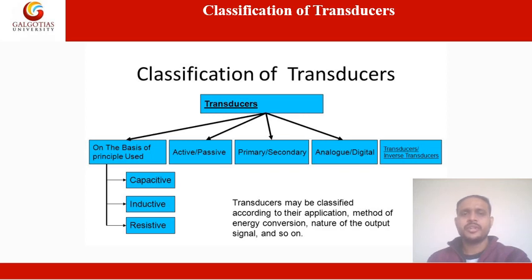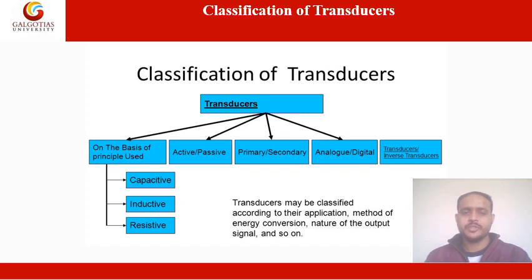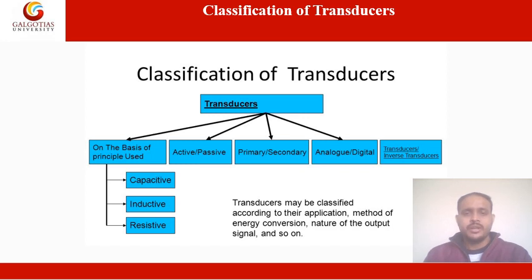The classification based on principle of use includes capacitive, inductive, and resistive transducers. We will also see active or passive transducers, primary or secondary transducers, analog or digital transducers, and transducer or inverse transducer — these are some basic criteria on the basis of which we classify transducers.